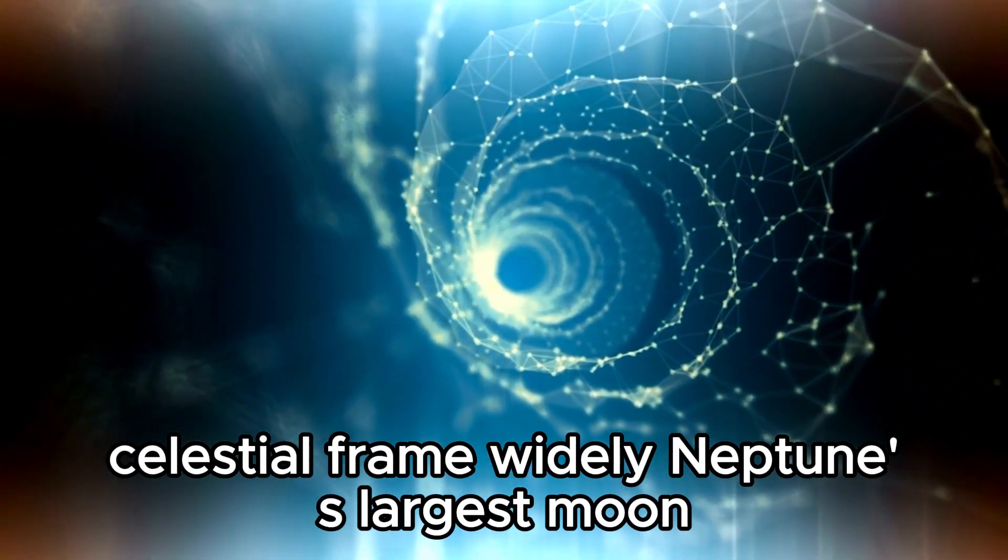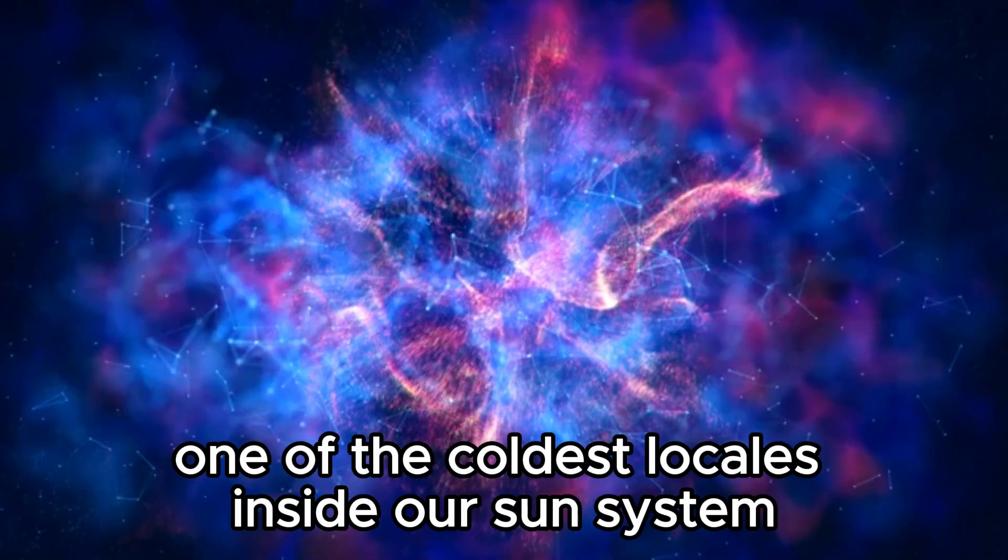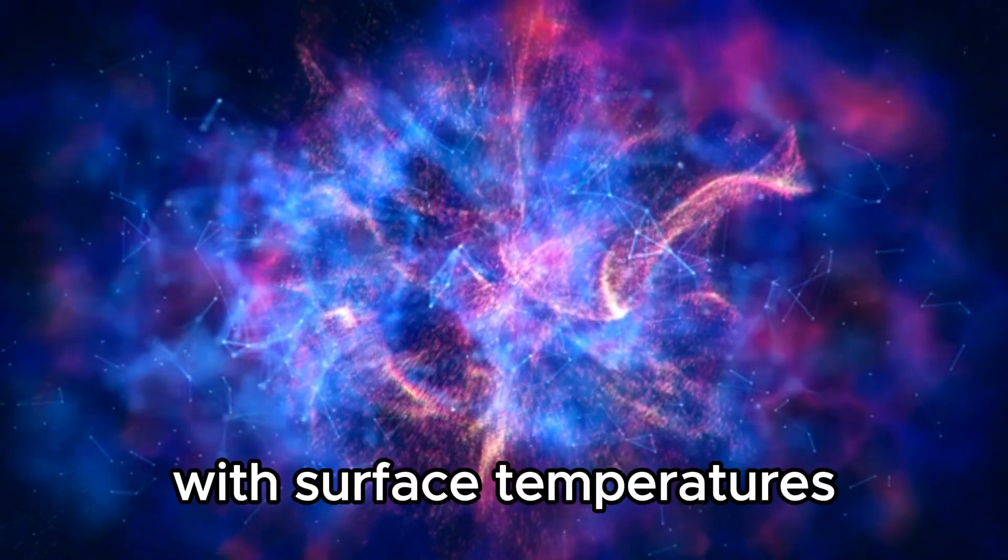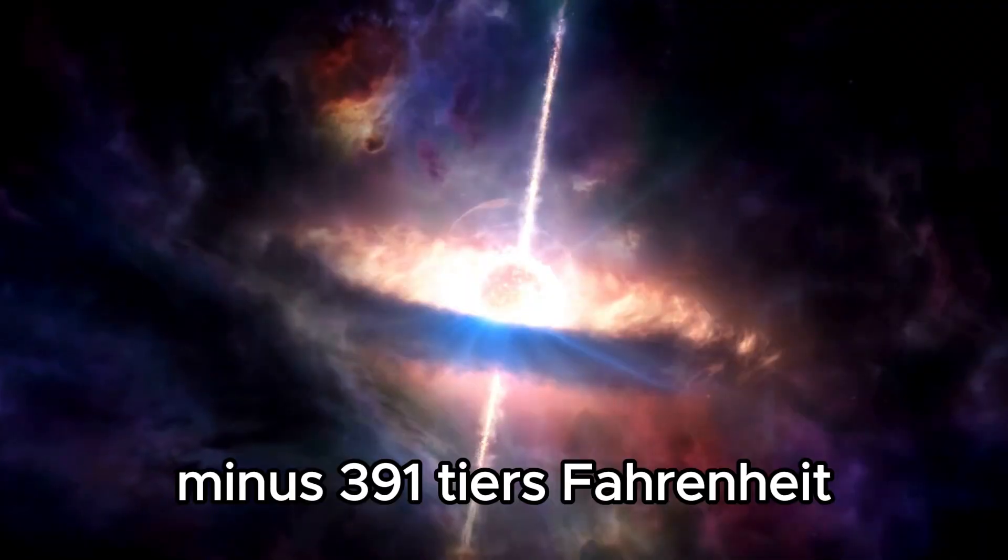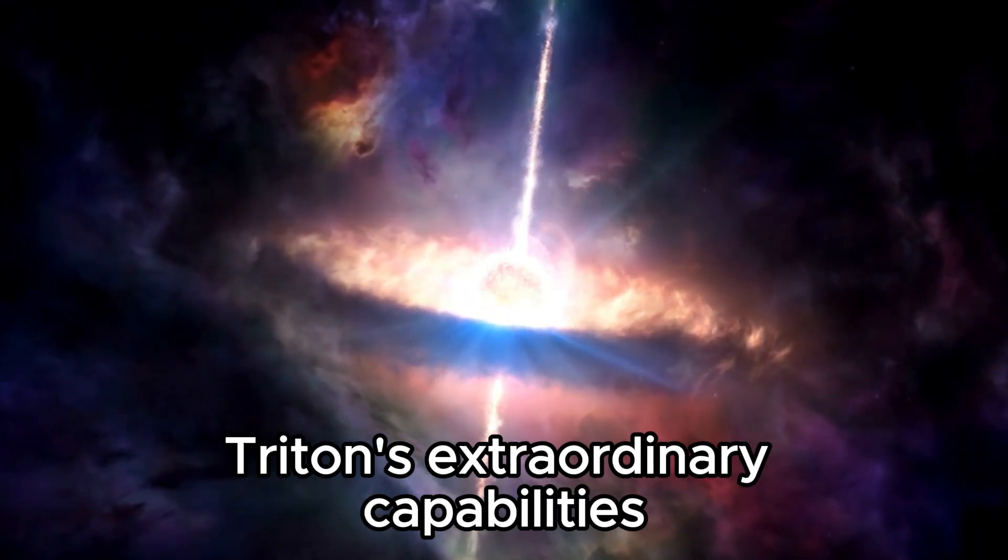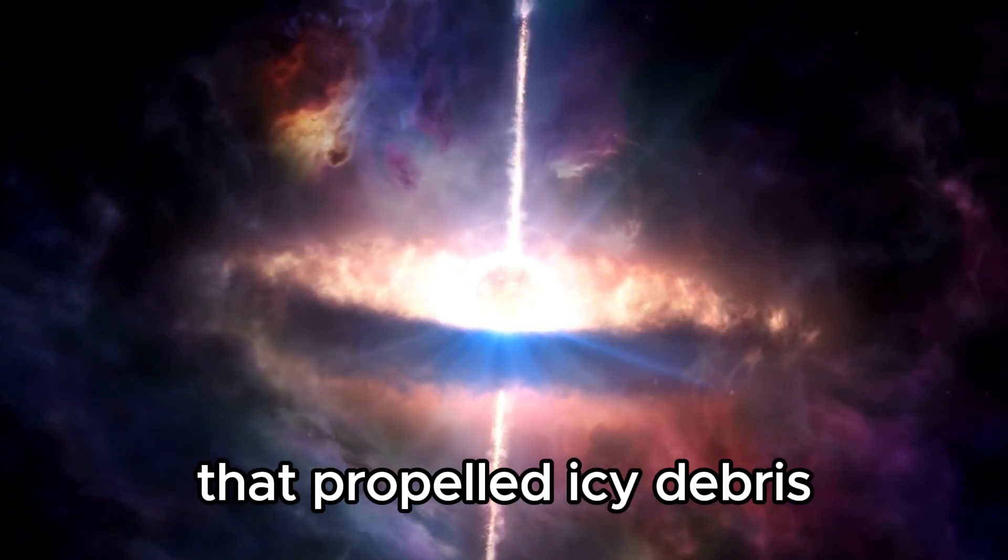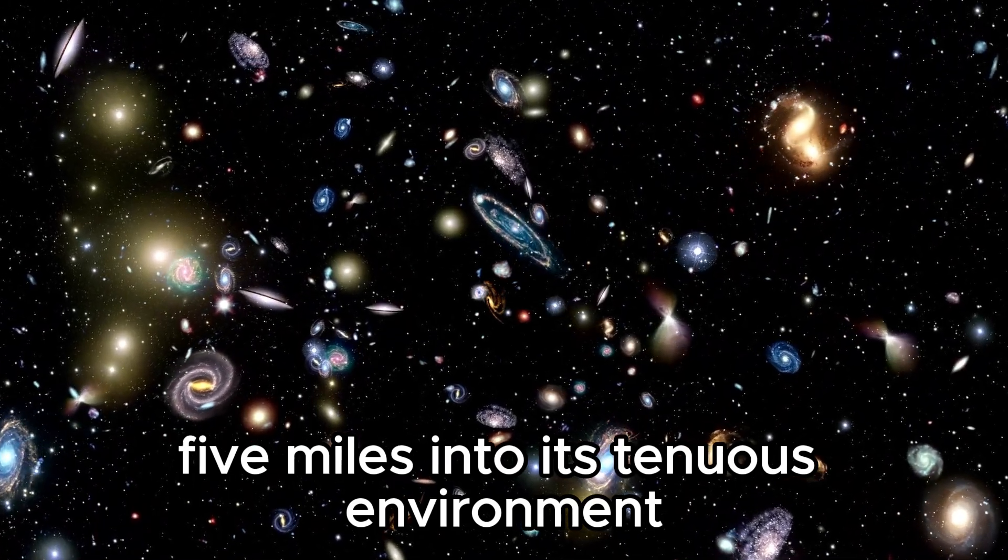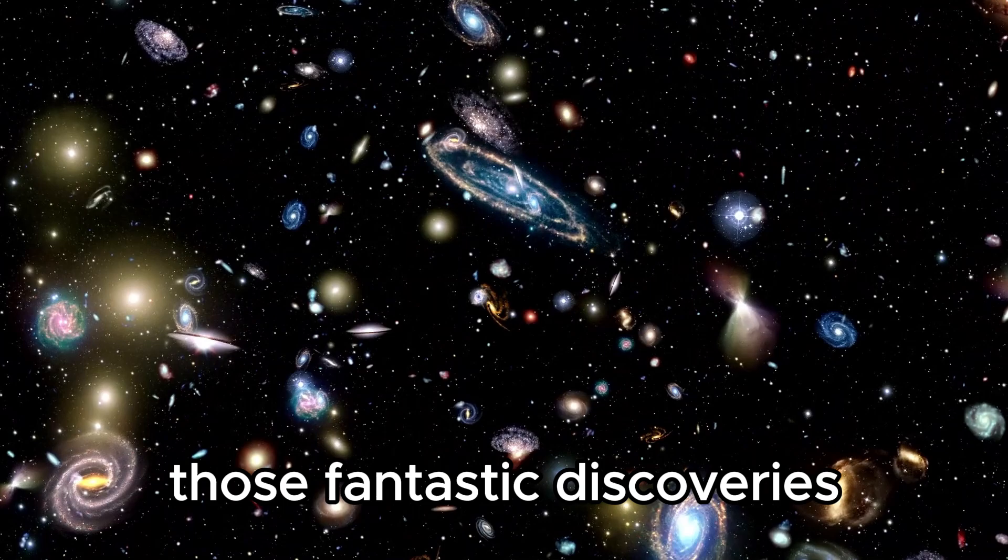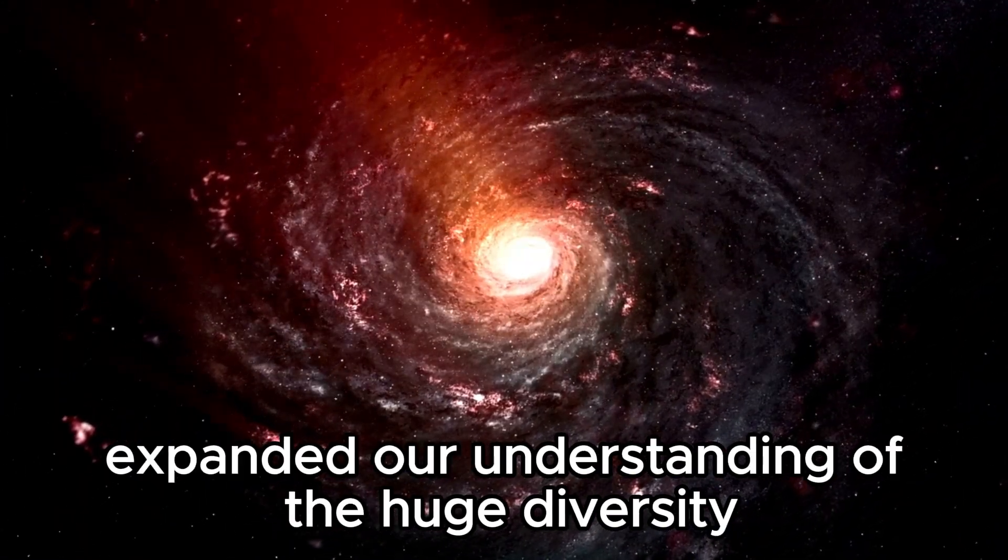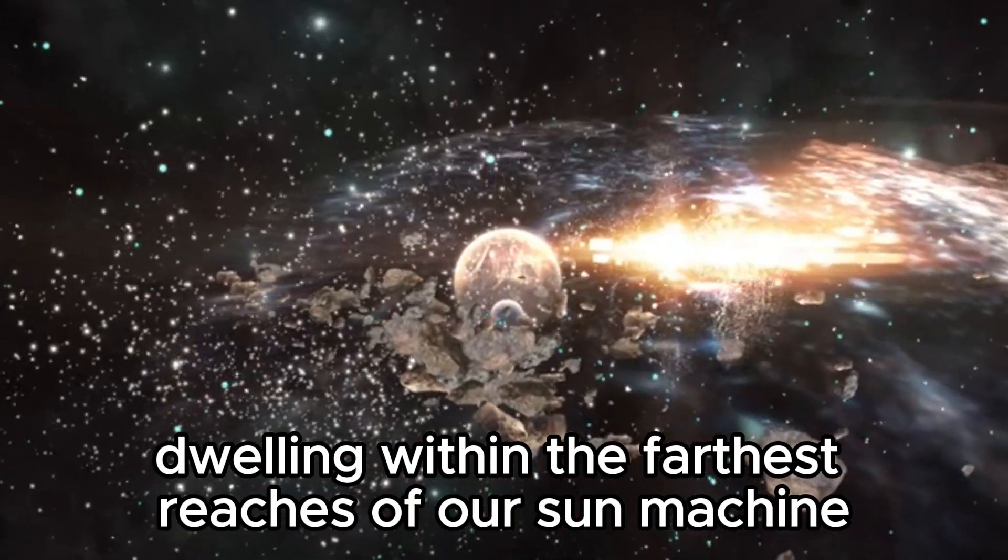Widely, Neptune's largest moon, Triton, became unveiled as one of the coldest locales inside our solar system, with surface temperatures plummeting to a bone-chilling minus 391 degrees Fahrenheit. Triton's extraordinary features, including its nitrogen-gas-spewing ice volcanoes that propelled icy debris 5 miles into its tenuous environment, further captivated our imaginations. Those fantastic discoveries expanded our understanding of the vast diversity and intricacy of celestial objects dwelling within the farthest reaches of our solar system.